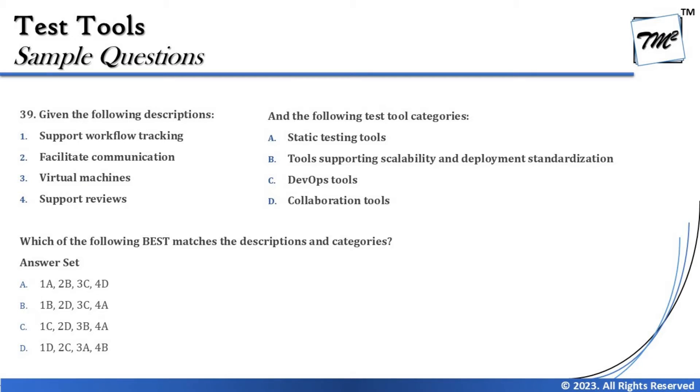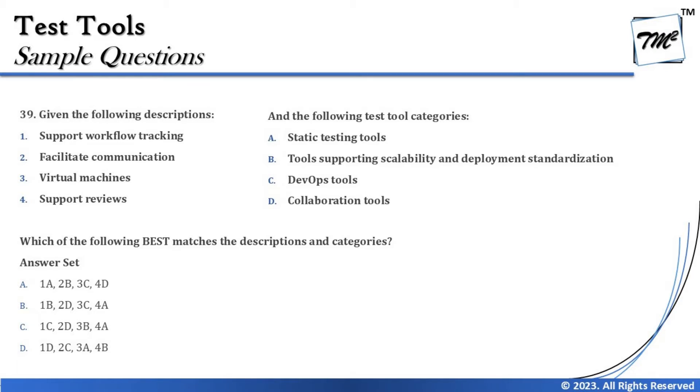Whenever you see a 'match the following' question, start with something you are very confident about, and you can get the rest through elimination. I see options here: support workflow, facilitate communication, virtual machine, support review. Now, 'support review' is very simple and straightforward — I can easily correlate that it goes to the static testing tool category, because review is a type of static testing. So I can easily correlate option four with category A, static testing tool.